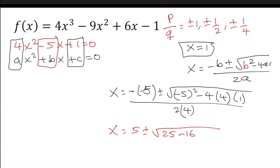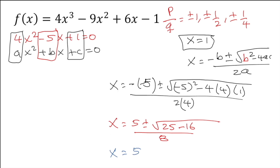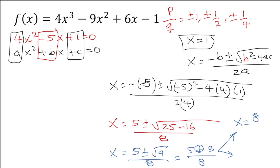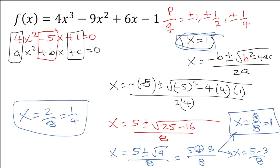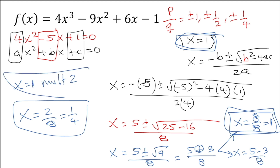Continuing: x = (5 ± √(25−16)) / 8 = (5 ± √9) / 8 = (5 ± 3) / 8. The first answer: (5+3)/8 = 8/8 = 1. The second answer: (5−3)/8 = 2/8 = ¼. So my three zeros are: x=1 (from synthetic division), x=1 (from quadratic), and x=¼. That means x=1 has multiplicity 2, and x=¼ has multiplicity 1.